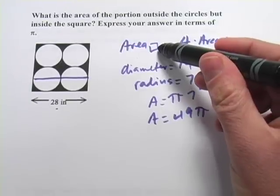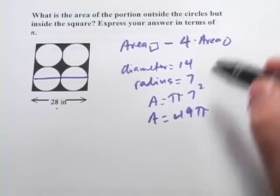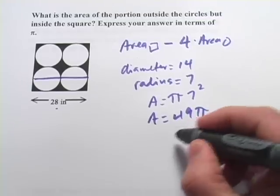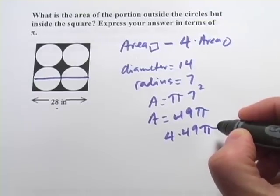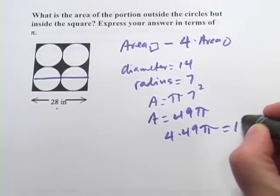Now let's figure out the area of, well actually, let's figure out the area of four of those circles. So that would be 4 times 49 pi, and that would be 196 pi.